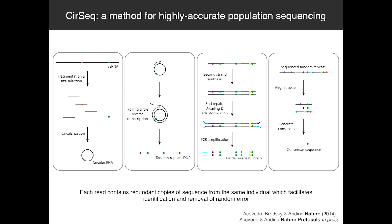With all that extra information within each read, we can break them up, align them, and form a consensus. In doing so, we're able to remove all of these excess sequencing errors.